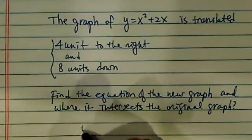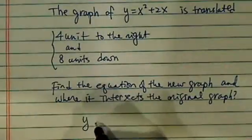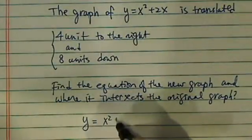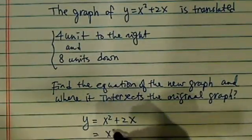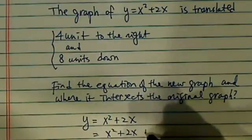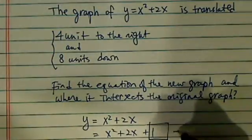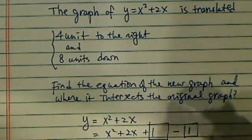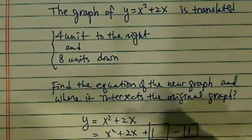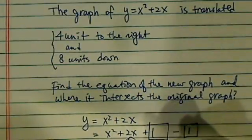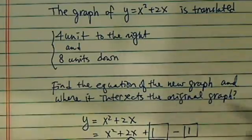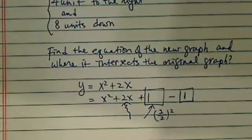Let's take a look at the original equation: y = x² + 2x. In order to find the vertex, I have to complete the square. I'm going to add a magic number minus the same magic number. To get this magic number, you take the coefficient of x, divide by 2, and square it. In our case, it's 1.